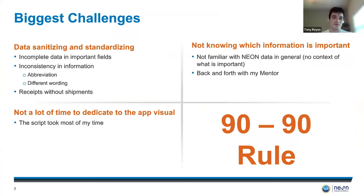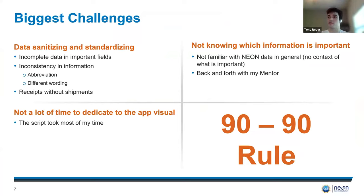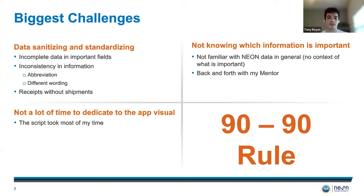Biggest challenges: it was my first real experience working with large datasets, as well as working with scientific data. There were a lot of problems at the start. It was hard to sanitize and standardize it, because on one side there was sometimes a lot of missing information that was very important, like an ID. And then there was also inconsistency — a sample could be called 'warm,' which I know is a temperature issue, but at the same time it could instead say a specific Celsius degree temperature, which was fun to figure out.